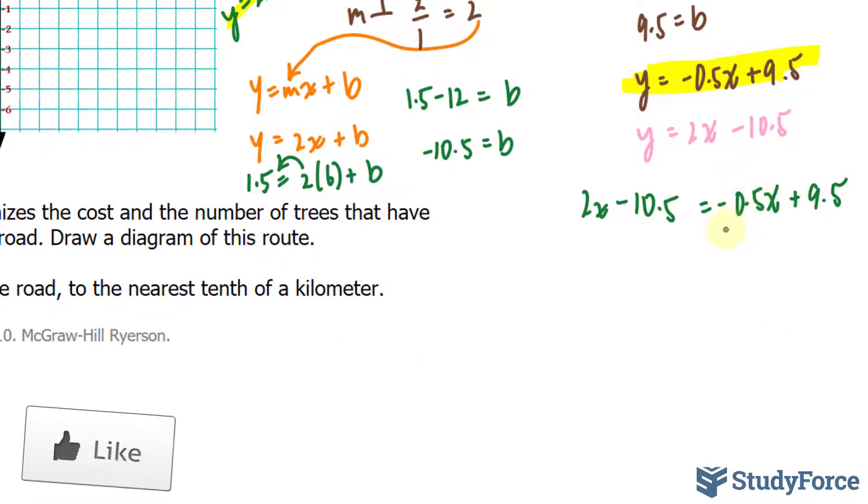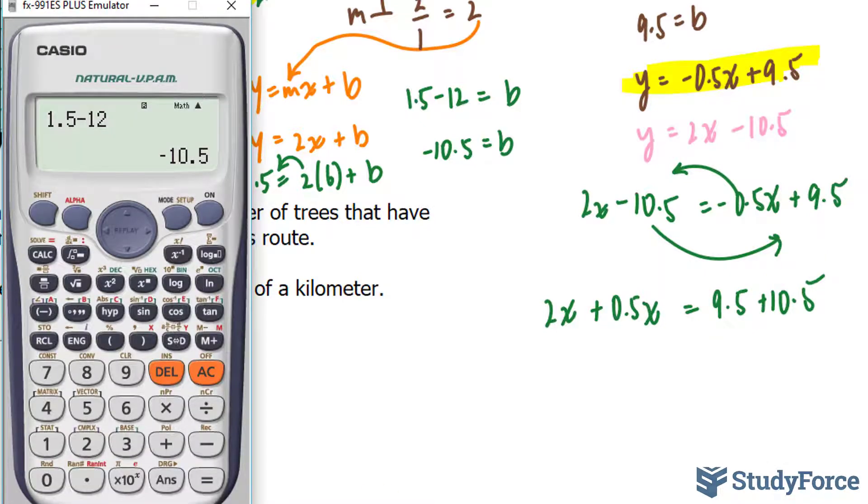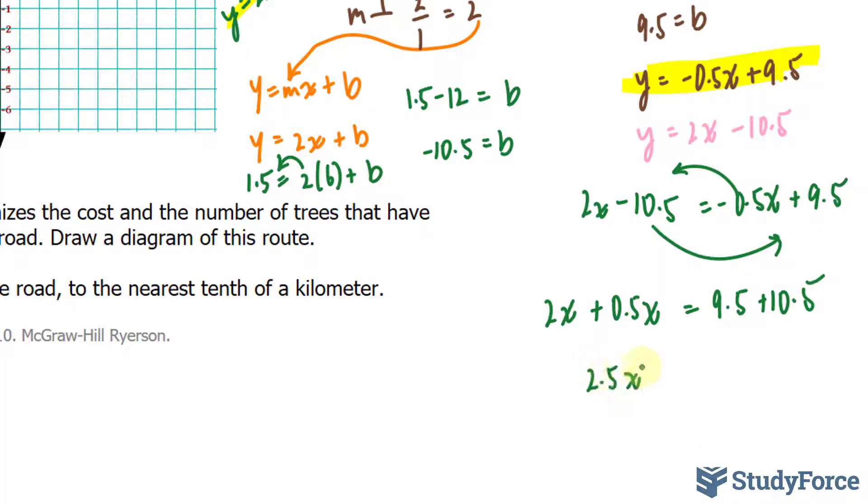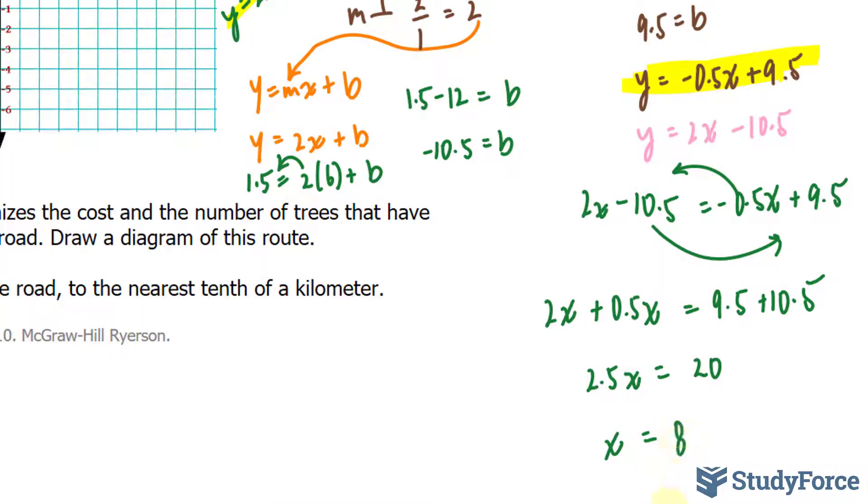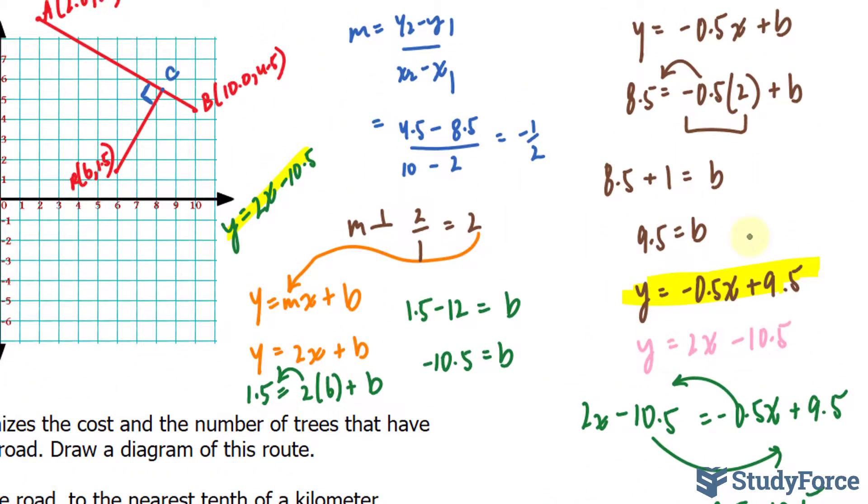Solving for x isn't hard. I'll collect like terms, bring this over and bring that over. 2x plus 0.5x equals 9.5 plus 10.5. Using my calculator, 2 plus 0.5 is 2.5. That's 2.5x. And adding these up gives us 20. Solving for x by dividing both sides by 2.5, we end up with 8. 8 represents the x coordinate of the point of intersection.